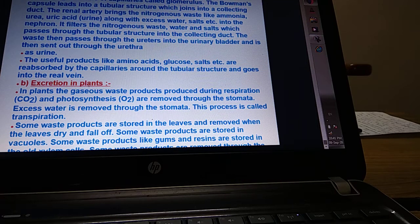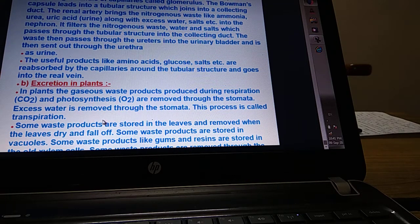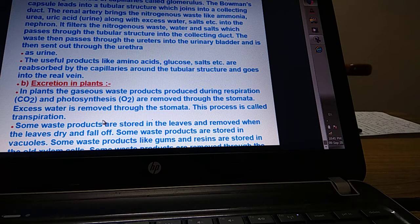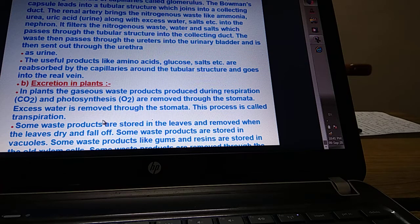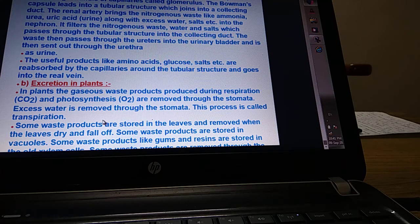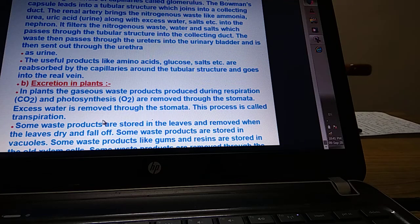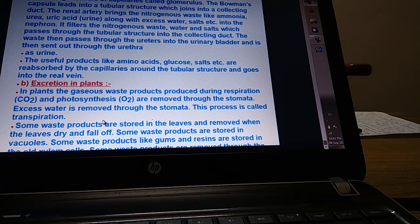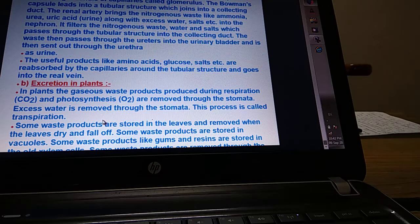Now next we come to excretion in plants. Plants also produce different wastes like carbon dioxide during respiration and oxygen during photosynthesis. They have different ways or methods to remove these wastes. Gaseous wastes - CO2 and oxygen - are removed through the stomata. Excess water is also removed through the stomata by the process of transpiration. So these are the wastes: carbon dioxide, oxygen, and water.